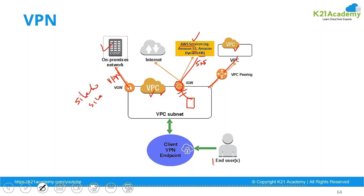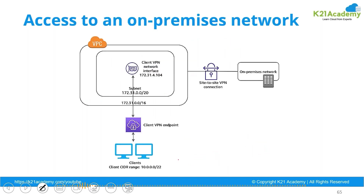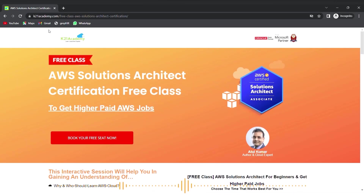If it is one end user with a laptop trying to connect to your VPC, then a client VPN endpoint is required to be created in Amazon. These are the various connectivity services available. If you have an on-premise site with multiple users and machines trying to communicate with your cloud site, you need a site-to-site VPN. If it is one or two clients trying to communicate with your VPC, you need a client VPN endpoint.